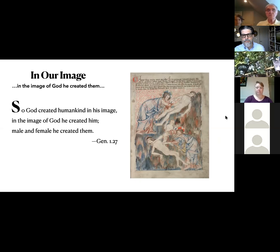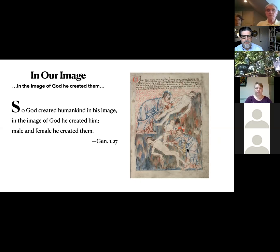This image here is actually from Genesis 2. We've got two descriptions of the creation of humanity, but I'm focusing on Genesis 1 for the moment. So God created — remember, it's the singular Adam. God created man in his image. In the image of God, he created him. Male and female, he created them.